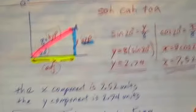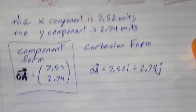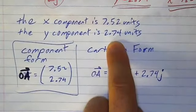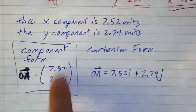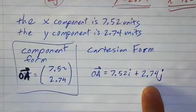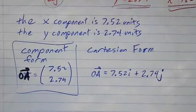Okay. So now that I know the x component is 7.52, the y component is 2.74, I can write the vector in component form like this, or I can write the vector in Cartesian form like this. And that's what you need for this lesson. Hope that helped.